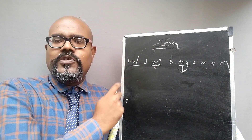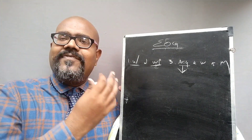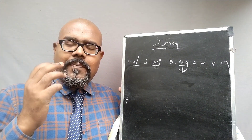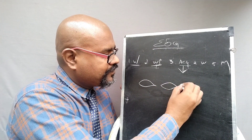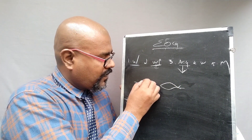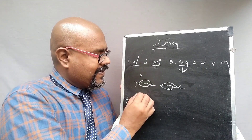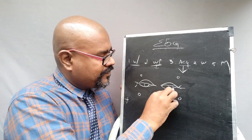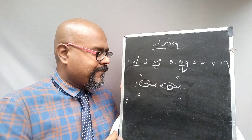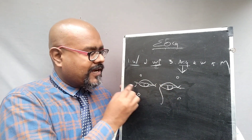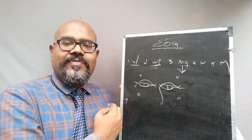For the measurement of EOG, we can place the electrodes above and below the eye, or right and left of the eye. We place the electrodes up and above, and below the eye, and to the right and left of the eye.